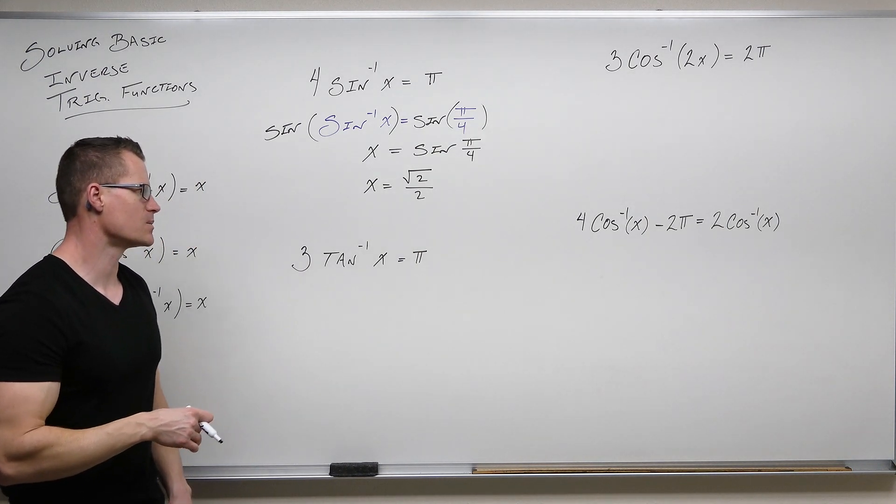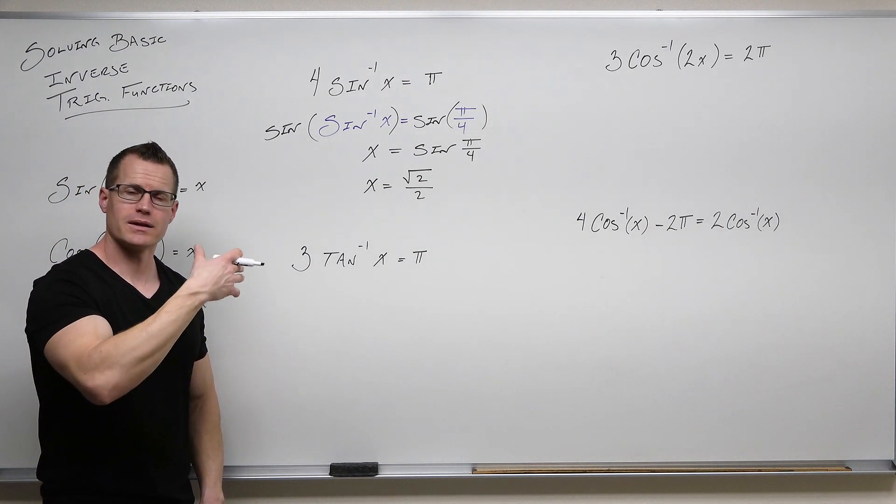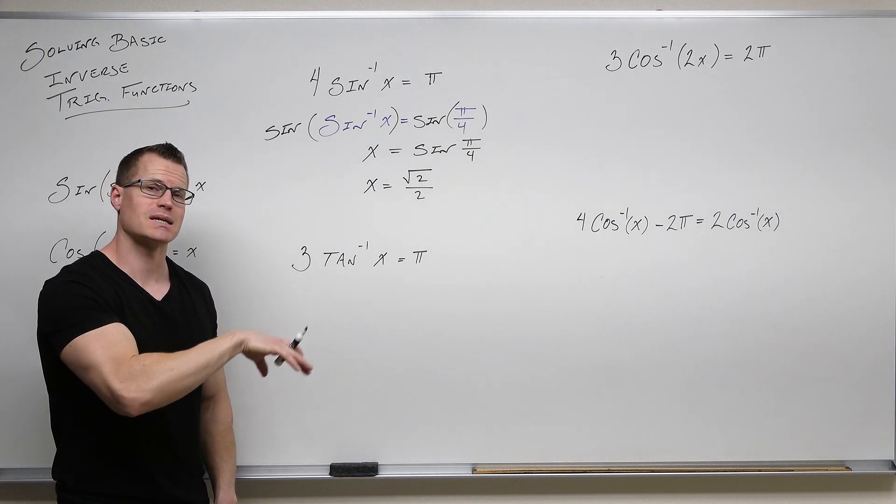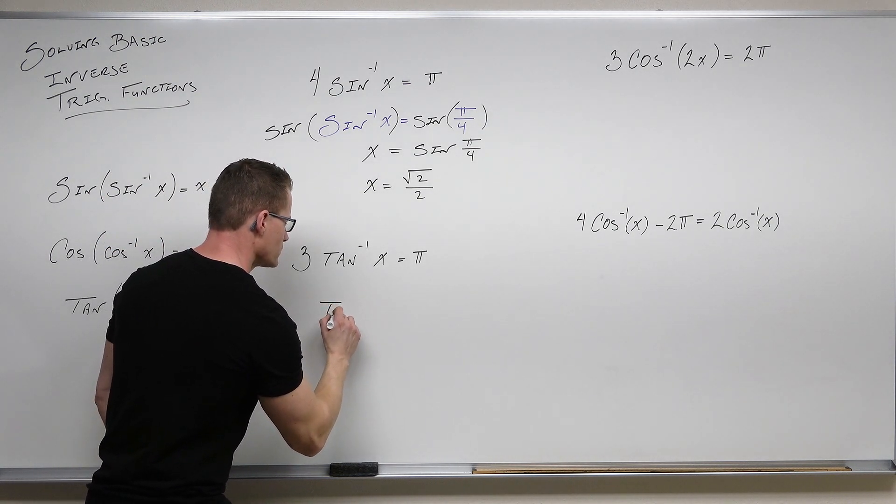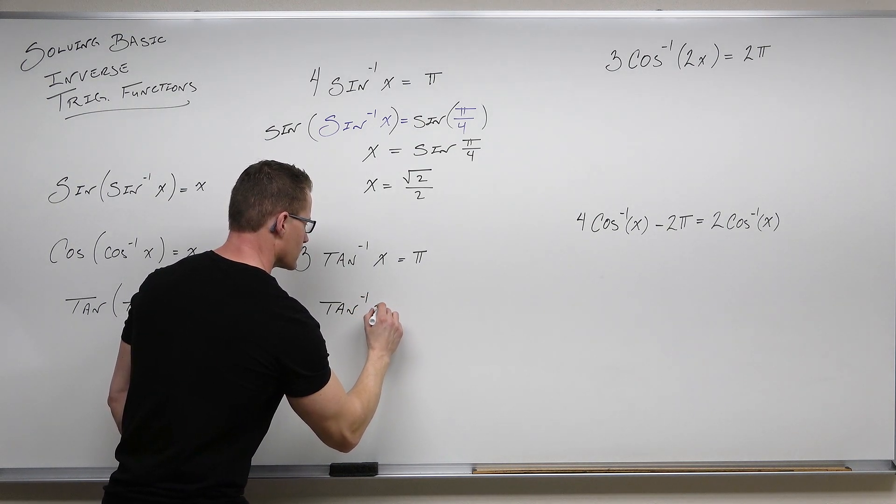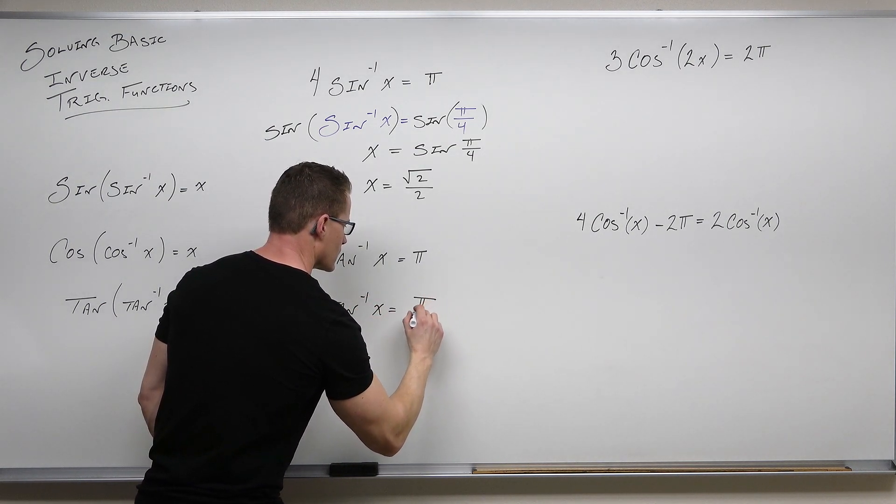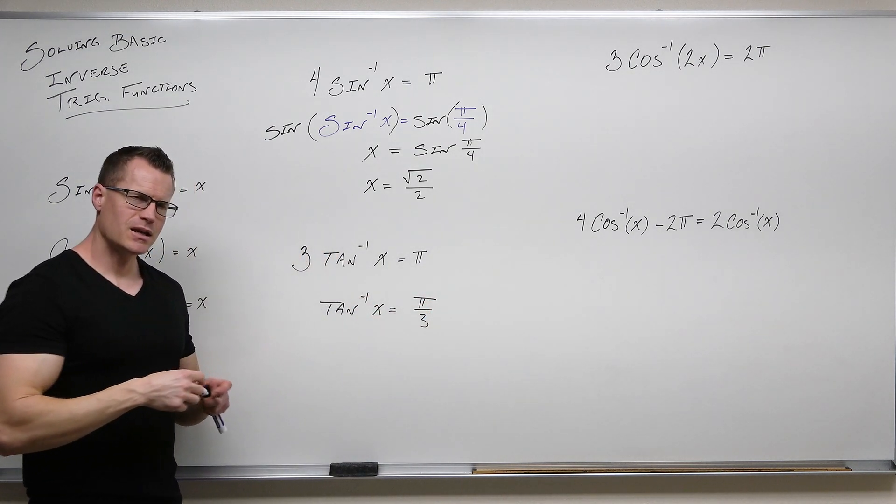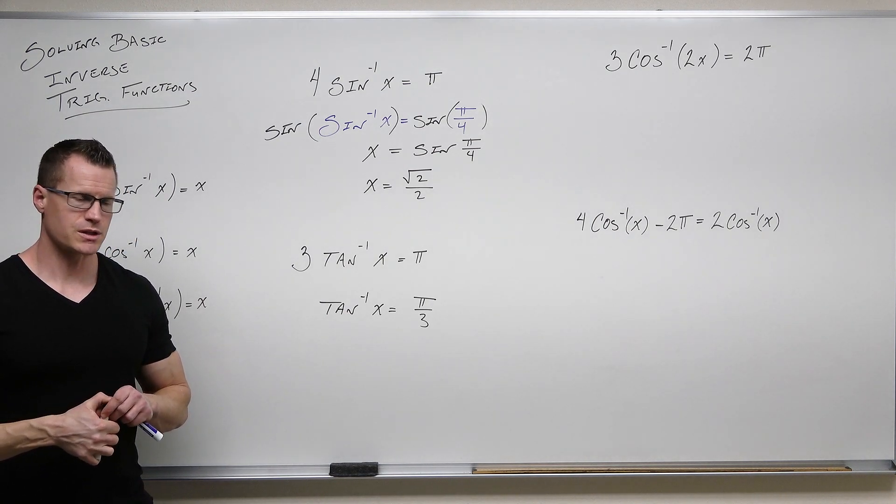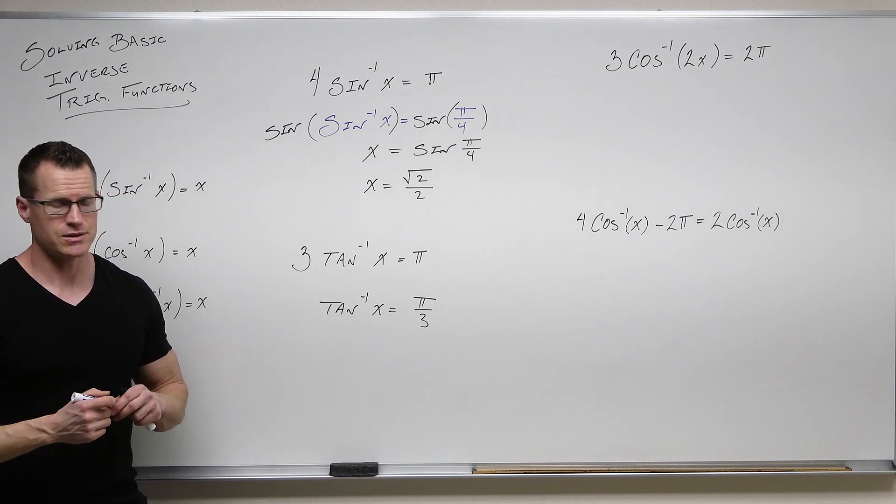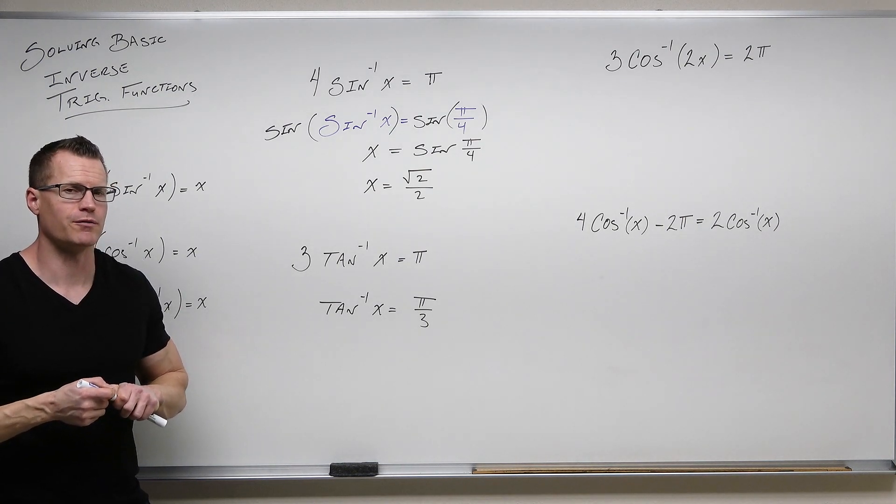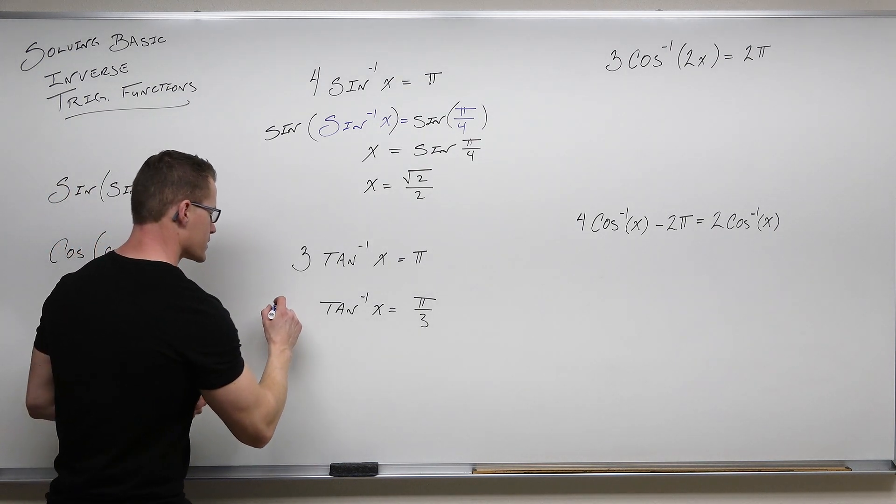Same thing's going to happen here. 3tan⁻¹(x) = π. Let's divide both sides by three, isolating that tan inverse. It's inverses that undo functions. So for the inverse of tangent, for tangent inverse, tangent is that appropriate inverse. Let's take tangent on both sides.